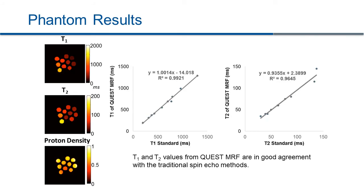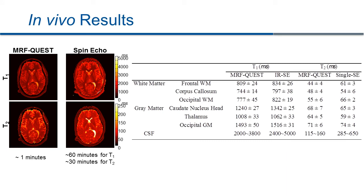First, we validated the T1 and T2 values from MRF-QUEST against the gold standard spin echo methods. We plotted the T1 and T2 values from MRF-QUEST against the T1 and T2 standards measured by the spin echo method, which shows that MRF-QUEST is in good agreement with the traditional spin echo method. We also did the same validation in vivo in the brain. At various regions of interest in gray matter and white matter, MRF-QUEST has similar T1 and T2 values to the gold standard spin echo methods. The acquisition time of MRF-QUEST was about 1 minute, spin echo for T1 was about 1 hour, and T2 was about 30 minutes.